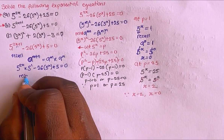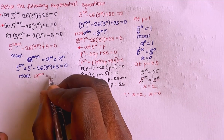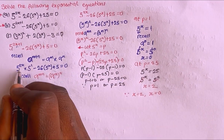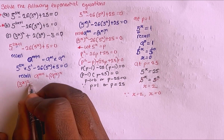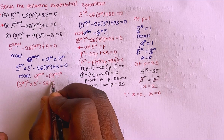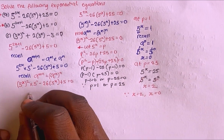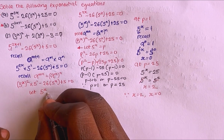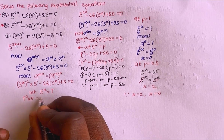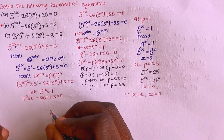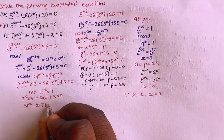Recalling a^(mn) = (a^m)^n, I rewrite 5^(2x) as (5^x)^2. Now letting T equal 5^x, I get T² times 5 minus 26T plus 5 equals 0, which simplifies to 5T² minus 26T plus 5 equals 0.